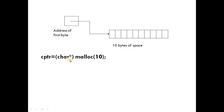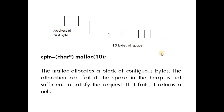Similarly, cptr = (char *) malloc(10). In this case, 10 bytes will be allocated because a character requires only one byte. So 10 bytes will be contiguously allocated and the address of the first byte will be stored in the pointer variable cptr. The malloc allocates a block of contiguous bytes. If there is not enough space in the heap, it returns a null pointer.